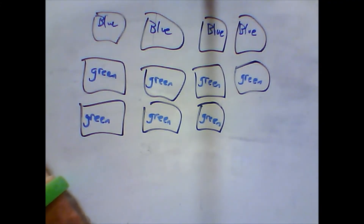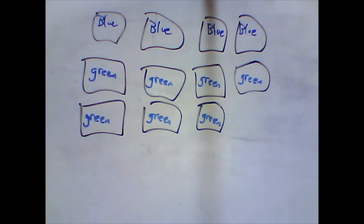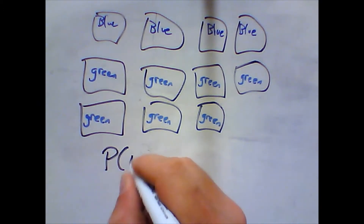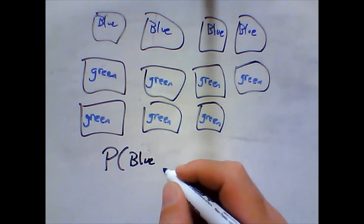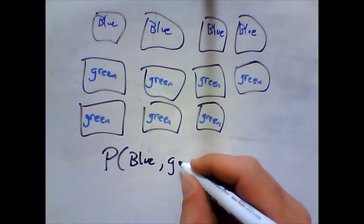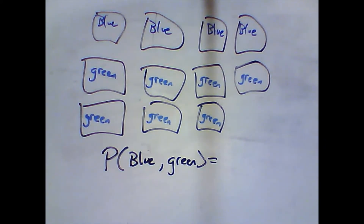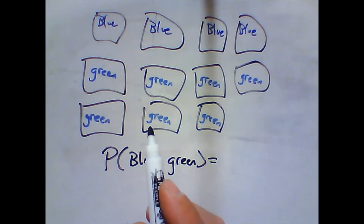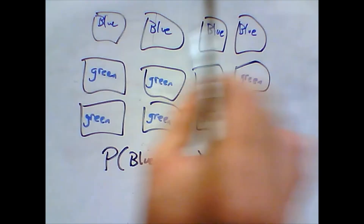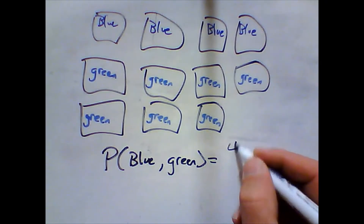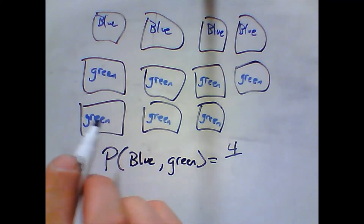You only select one to wear on Monday and then a different one on Tuesday. We're looking for the probability you wear a blue shirt on Monday and a green shirt on Tuesday. So let's do the picture. What's the probability I'm going to grab a blue shirt? There are four blue out of eleven shirts total — one, two, three, four, five, six, seven, eight, nine, ten, eleven.